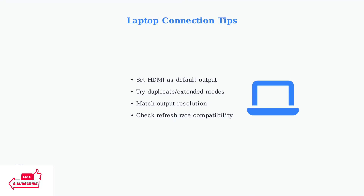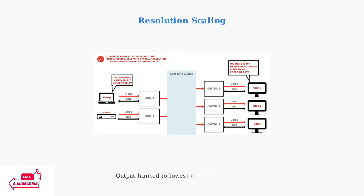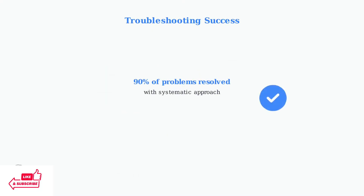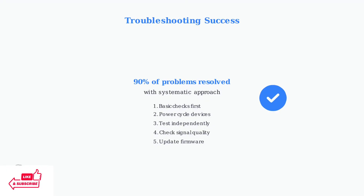Try different display modes like duplicate or extended and ensure your output resolution matches the display capabilities. If output resolution is limited, it's due to the lowest common format that all connected displays can accept. The system automatically scales to ensure compatibility across all devices. A systematic troubleshooting approach can resolve over 90% of splitter problems. Following these steps methodically will help you identify and fix most common issues efficiently.